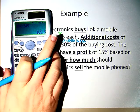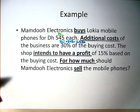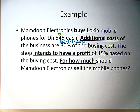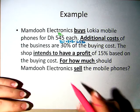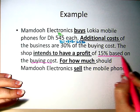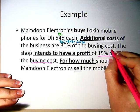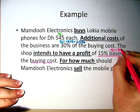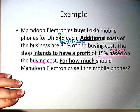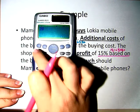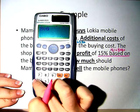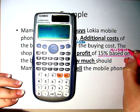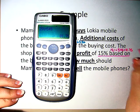So we have our additional costs. The shop intends to have a profit of 15% based on the buying cost. That means we're going to take 15% and multiply it by 545 as well. 15% times 545 gives me 81 dirhams and 75 fils.